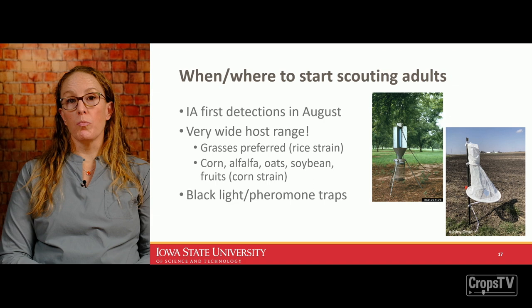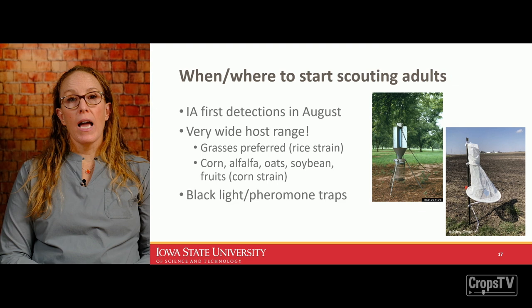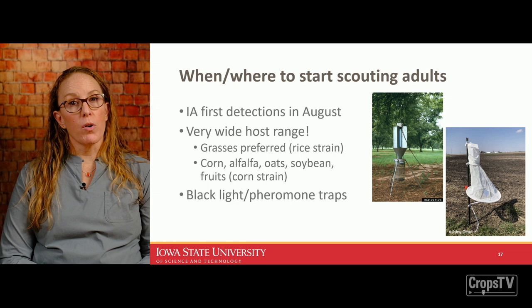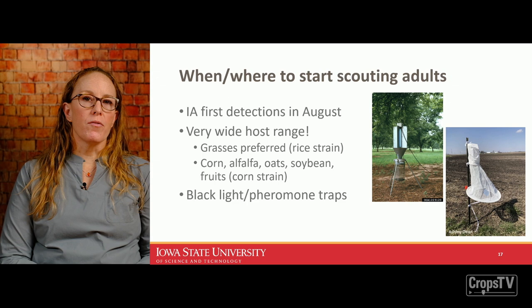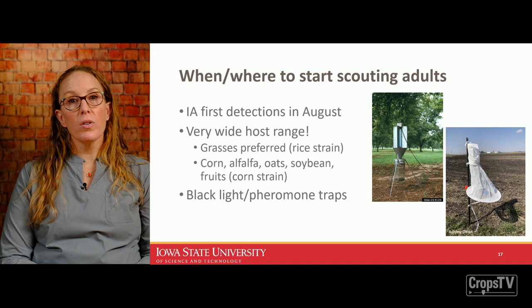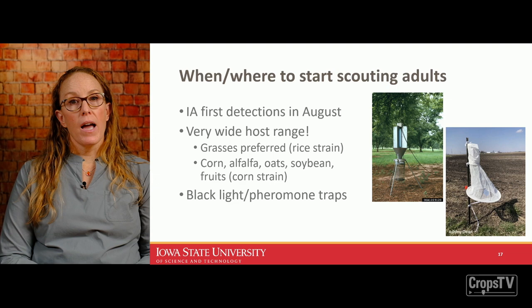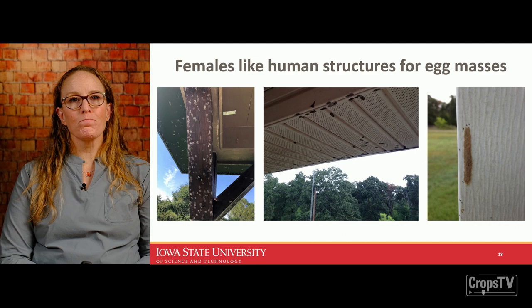For first detection of moths moving into your area, you can use a black light, since the moths are active at night, or a sex-baited pheromone trap. We do this for black cutworm and true armyworm, though we haven't specifically set up a fall armyworm trap because numbers have been fairly low over the last decade. Buying a trap with a pheromone bait and placing it in high-value crops — corn, pastures, grasslands — would tell you when fall armyworm arrives at your farm.